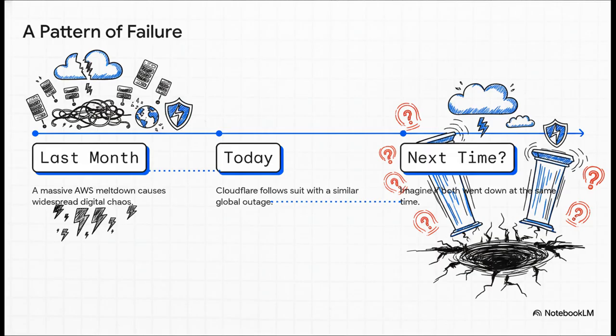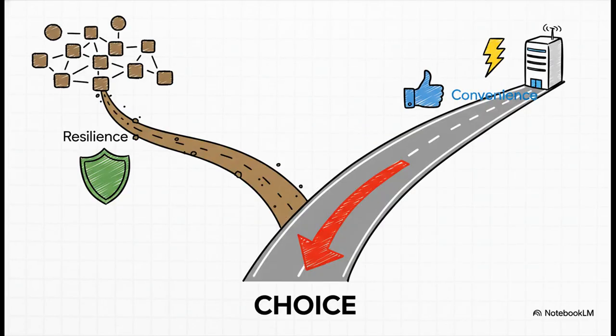And it leads to a really terrifying question. What happens if two of these pillars wobble at the same time? And that's the real takeaway here. The fragile internet that we have today didn't happen by accident. It's the direct result of thousands of choices made by developers and companies over many years. Choices that almost always favored speed, scale, and convenience over decentralized resilience. We chose this path. We built it this way.